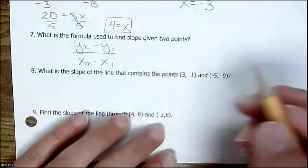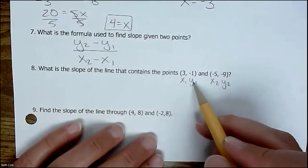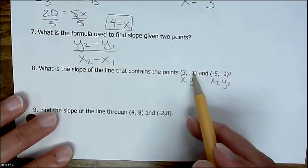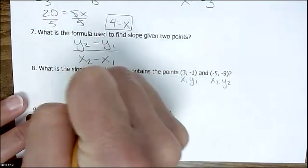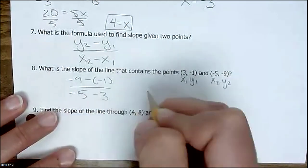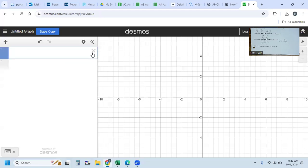Now we're going to use these two points and plug them into the formula. This is x1, y1, because it's the first point, it gets ones. This is the second point, so it gets twos. Then you just plug them in: y2 minus y1, so it's negative 9 minus negative 1. On the denominator, x2 minus x1, so negative 5 minus 3. You can put that in the calculator exactly like it looks, and it gives me 1. If this comes out to a decimal, there will be a button that can turn it back into a fraction.